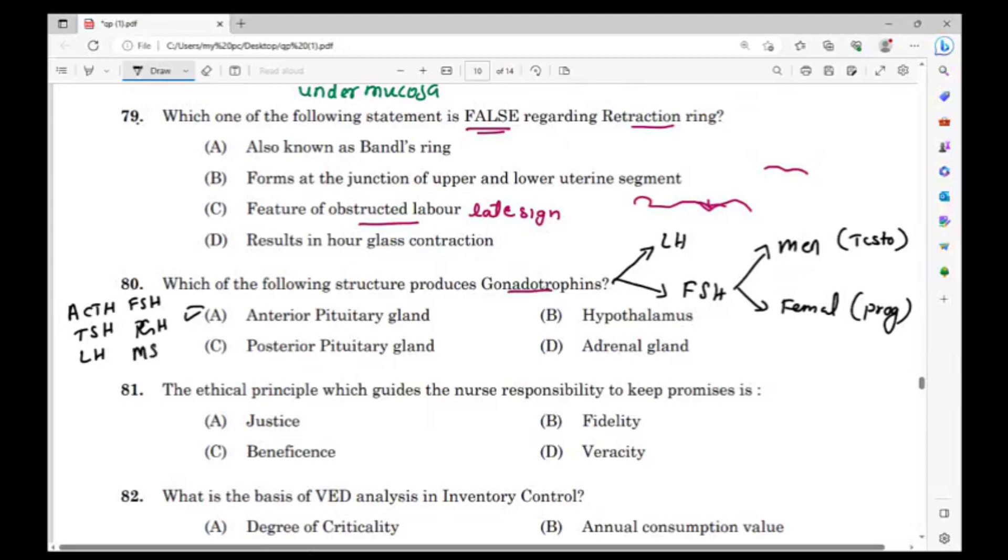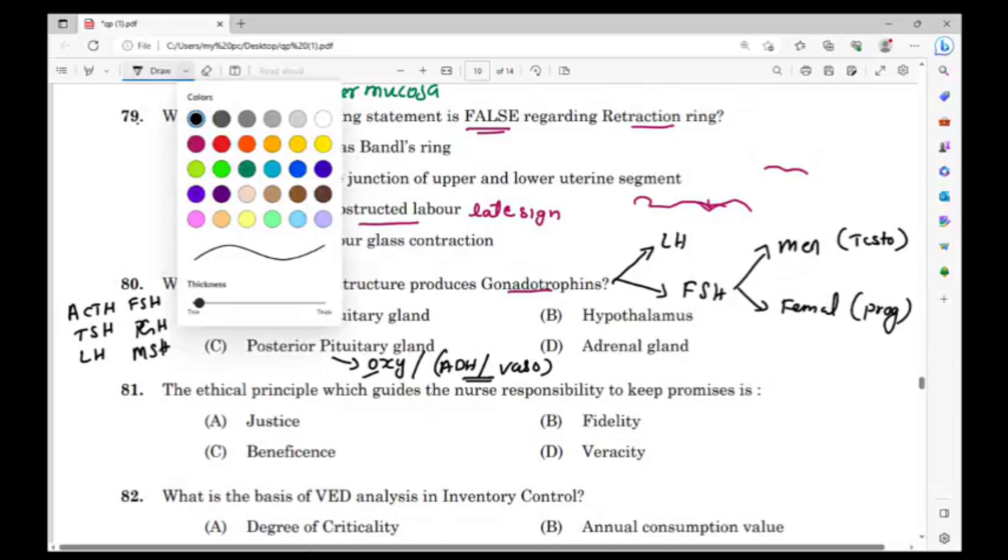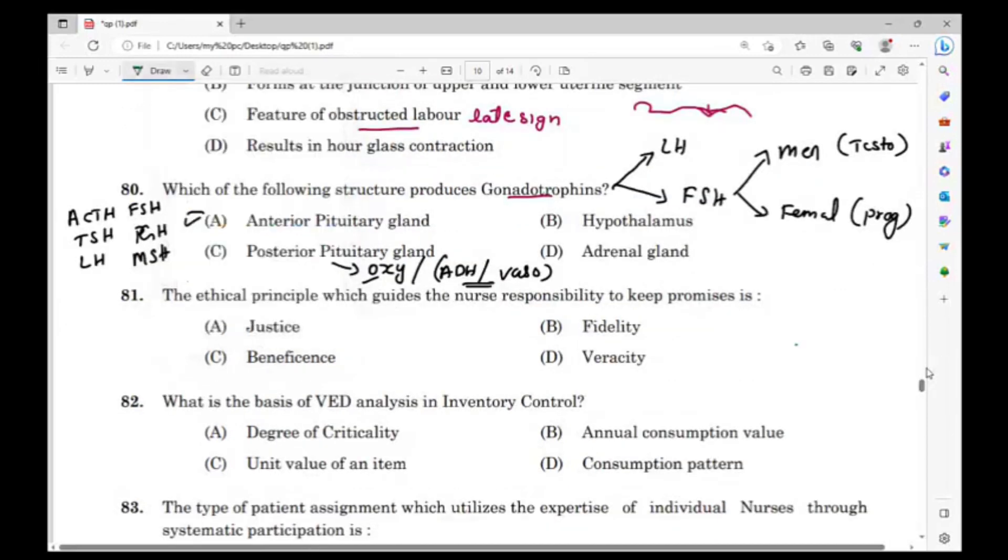Then growth hormone, melanocyte stimulating hormone - anterior pituitary gland produces these. Posterior pituitary gland produces oxytocin and ADH or vasopressin. ADH or antidiuretic hormone or vasopressin, then oxytocin are the hormones from the posterior pituitary gland. Next question: The ethical principle which guides the nurse's responsibility to keep promises.